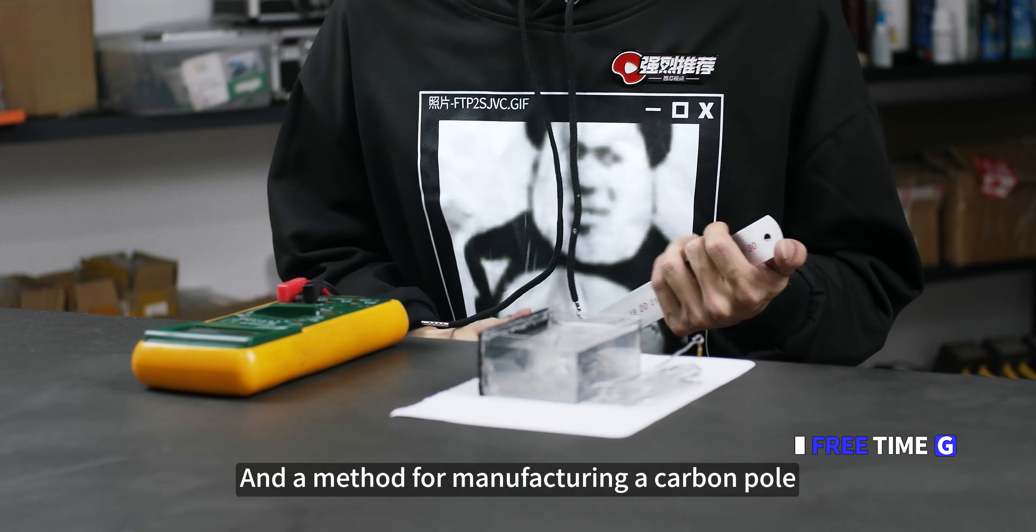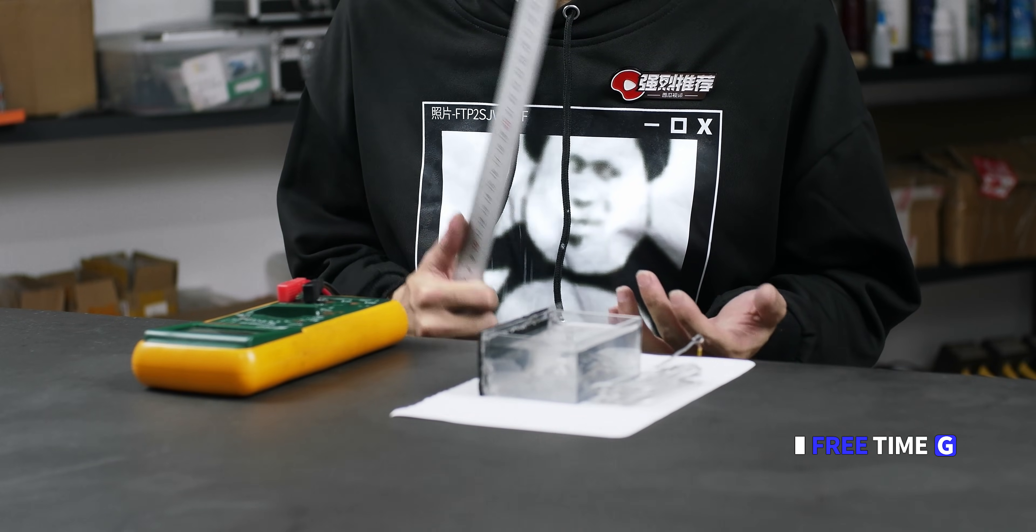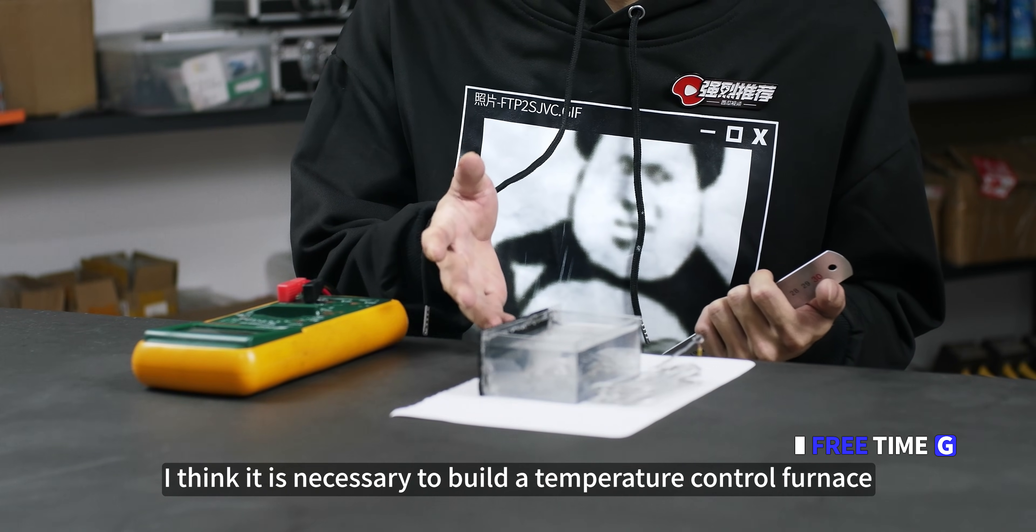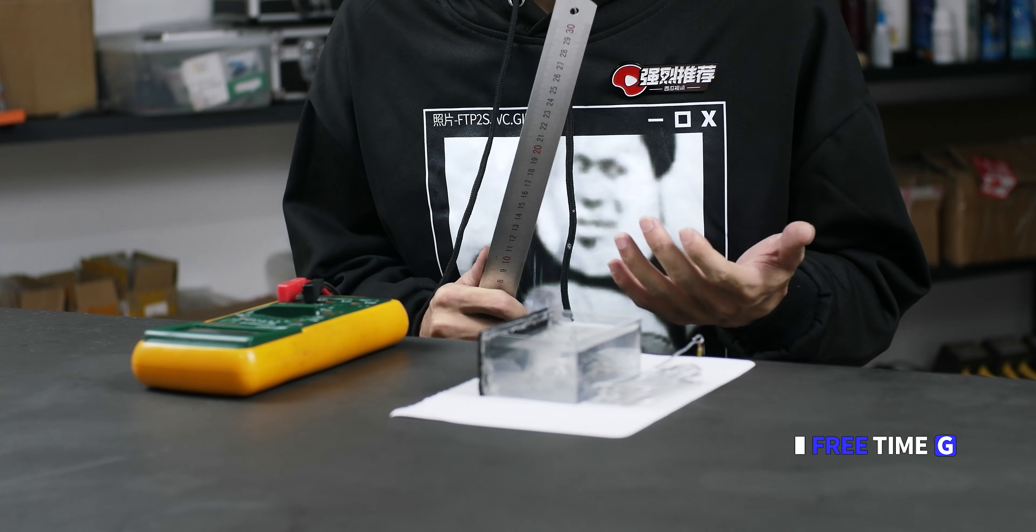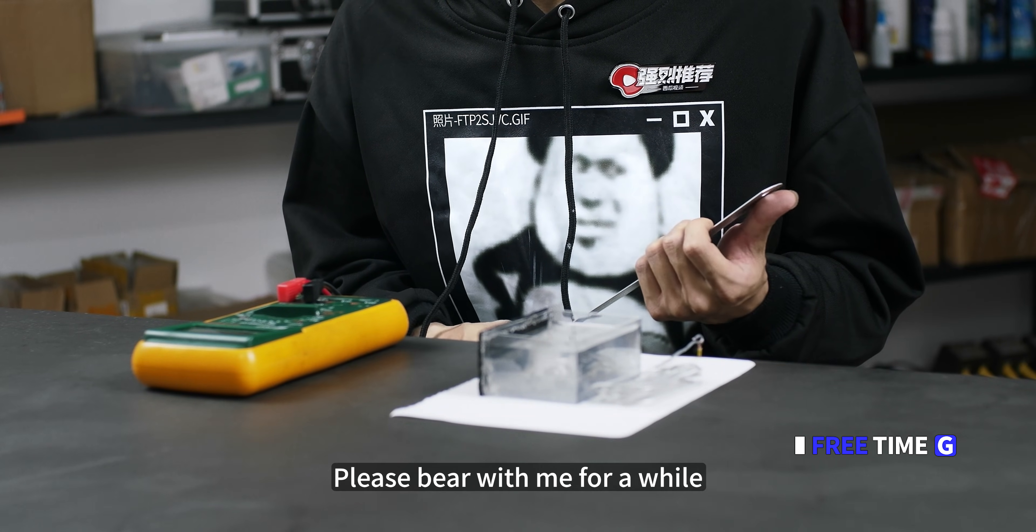Now we have understood the basic structure of metal air batteries. Next, let's talk about its principle and the method for manufacturing a carbon pole. Wait a moment. I think it is necessary to build a temperature control furnace. It will be used later when making electrodes. My video is longer, please bear with me for a while.